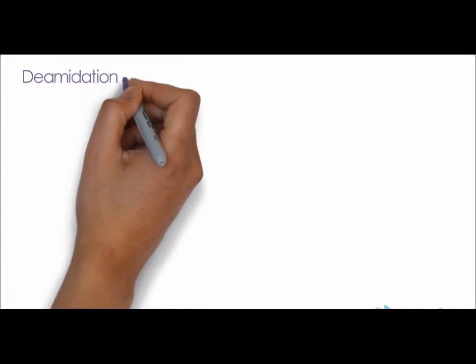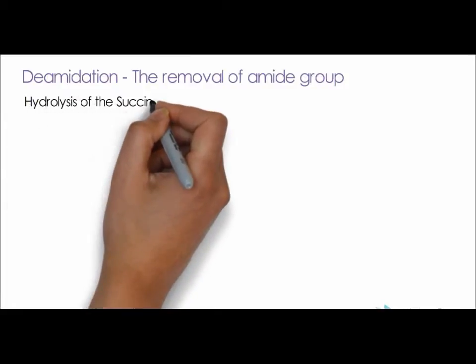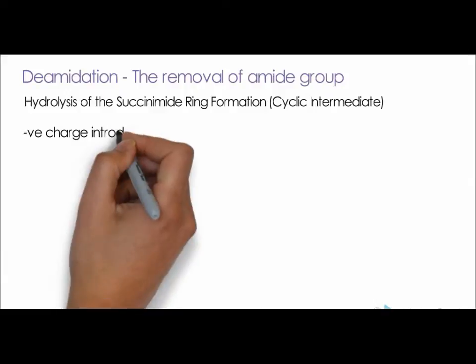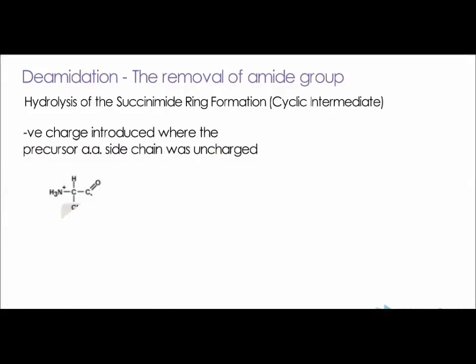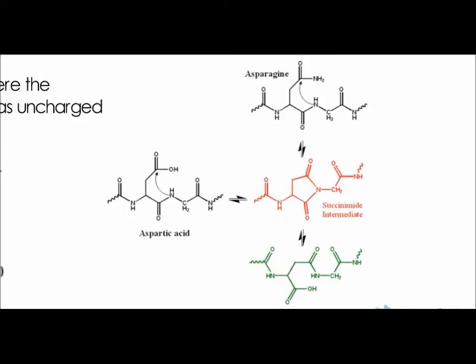Next, we look at deamidation, which is the removal of an amide functional group through the hydrolysis of a succinimide ring intermediate. A negative charge gets introduced at the removal site. Deamidation occurs at asparagine and glutamine residues. For our example, we'll look at asparagine deamidation. First, it forms a symmetric succinimide intermediate, and the symmetry of this intermediate results in two products of its hydrolysis, either an aspartate or an isoaspartate.